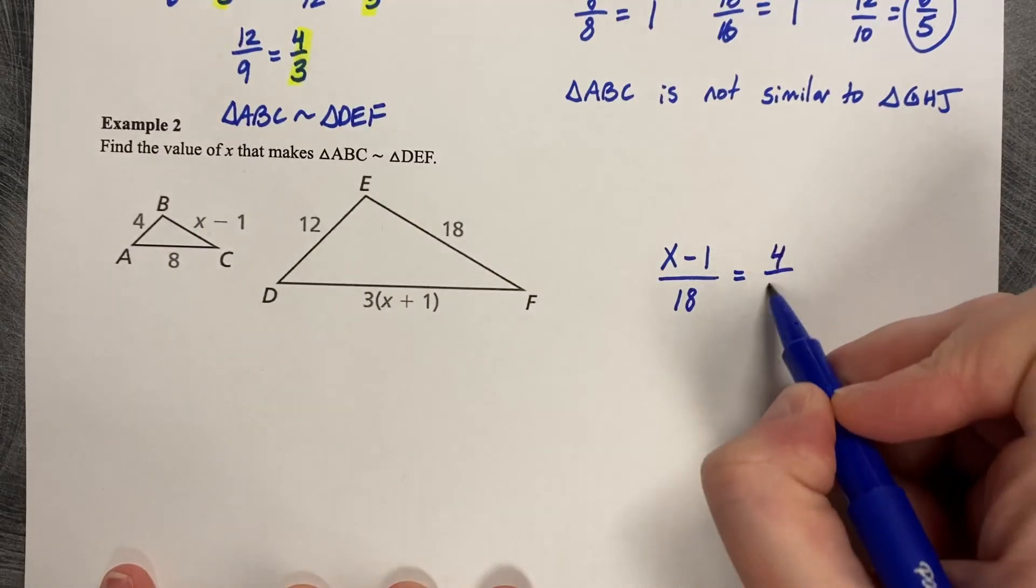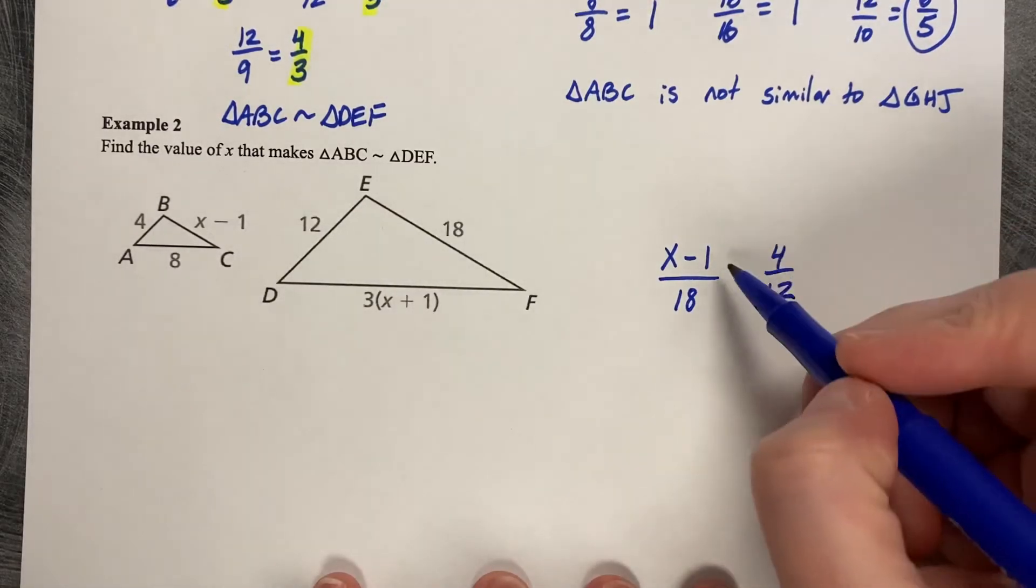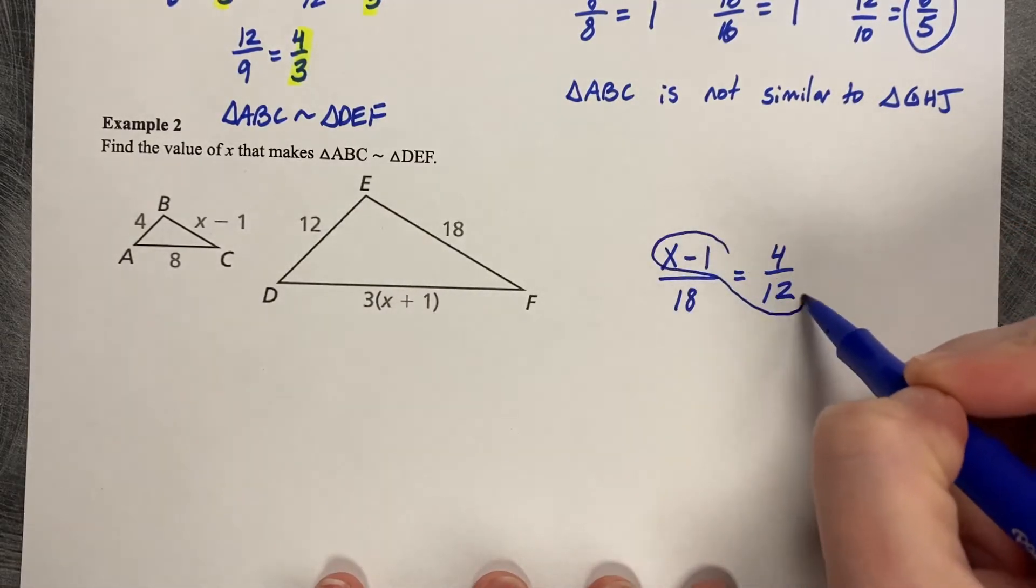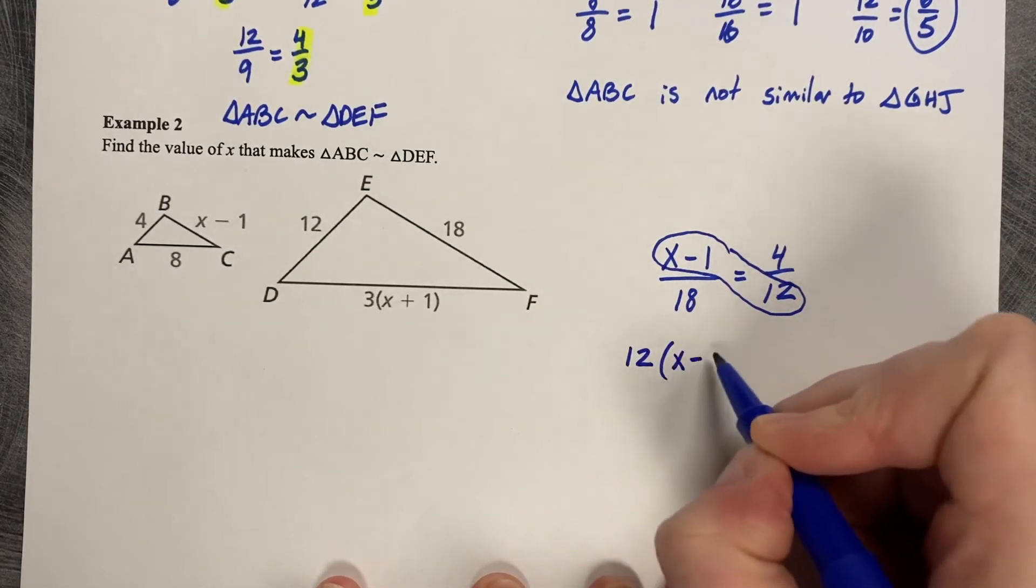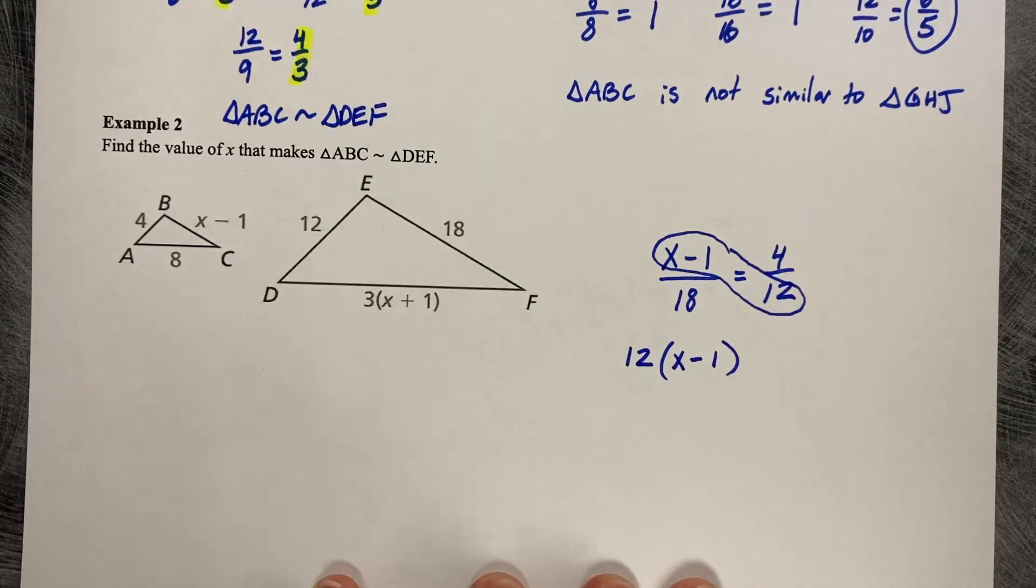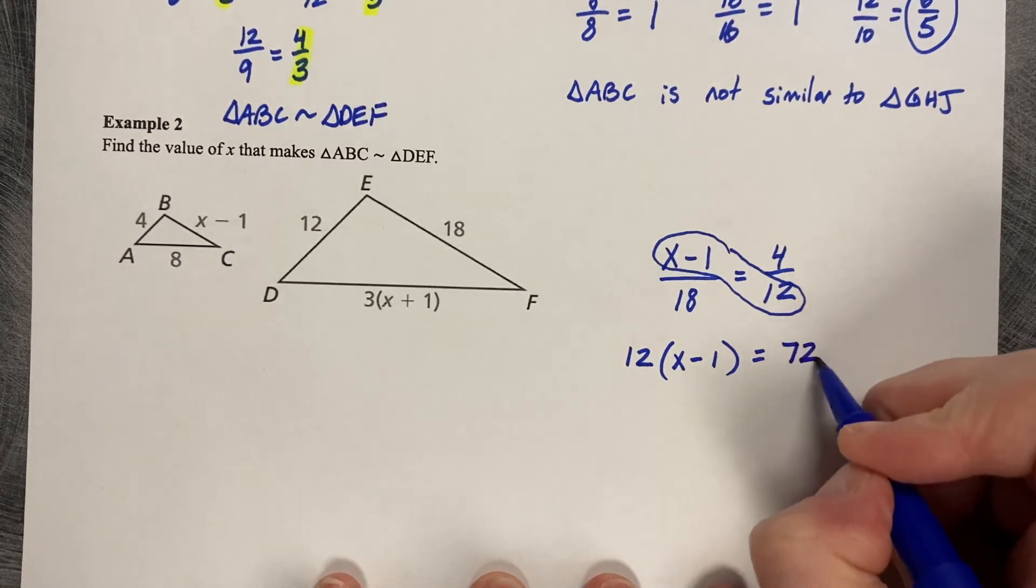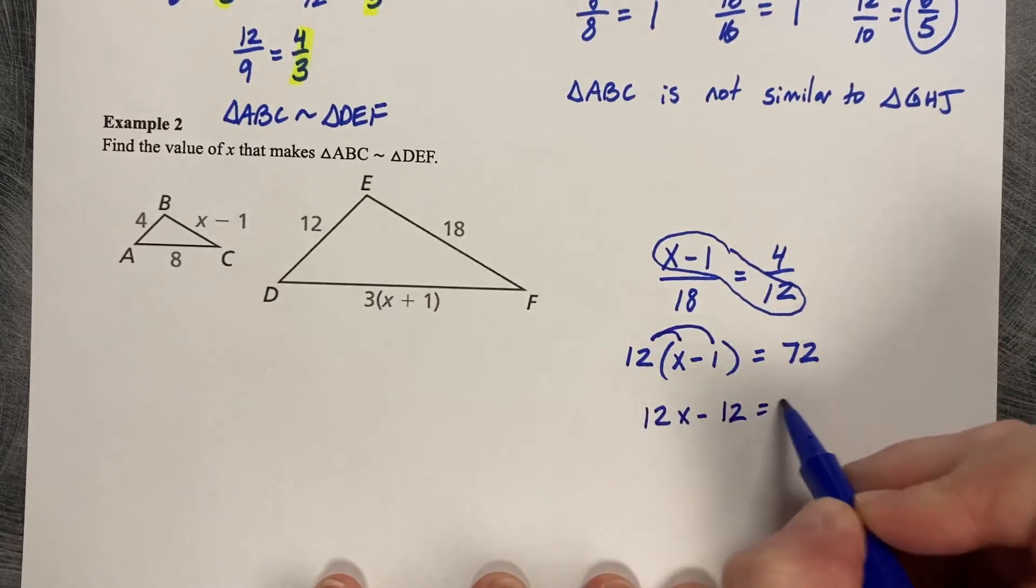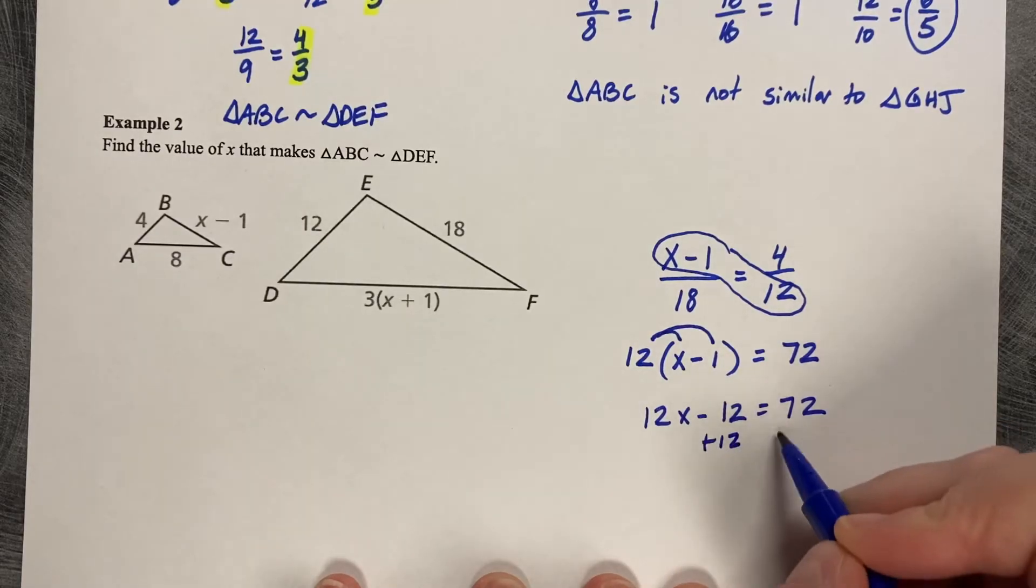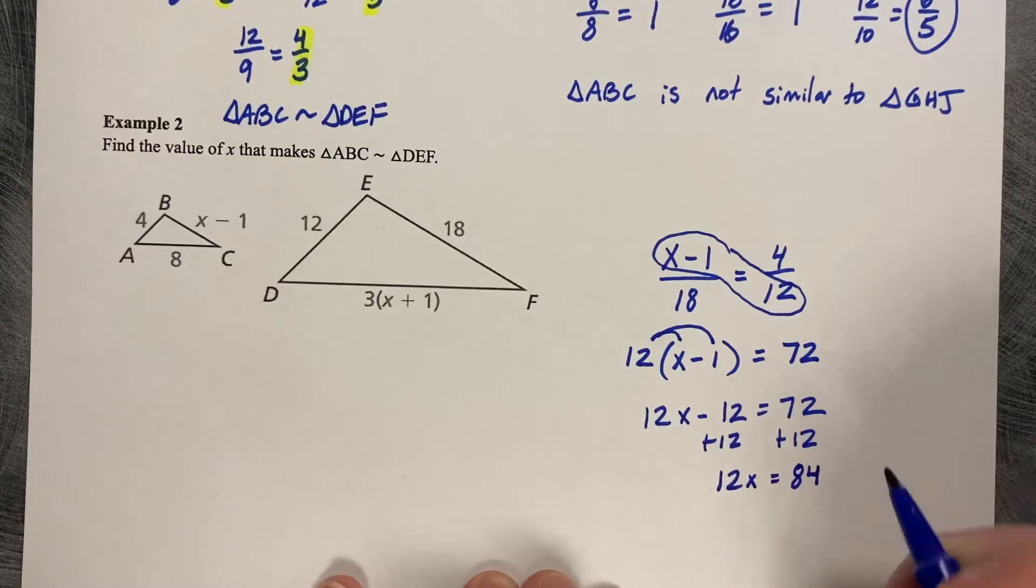So this is going to help me make proportional side lengths. We're going to cross multiply. So when I cross multiply the X and the 12 minus 1, the 12 becomes a multiplier to the X minus 1. It goes to each piece. And then 4 times 18 is 72. So now the 12 distributes to each piece. 12X minus 12 equals 72, plus 12, 12X equals 84. Divide by 12, and X equals 7.